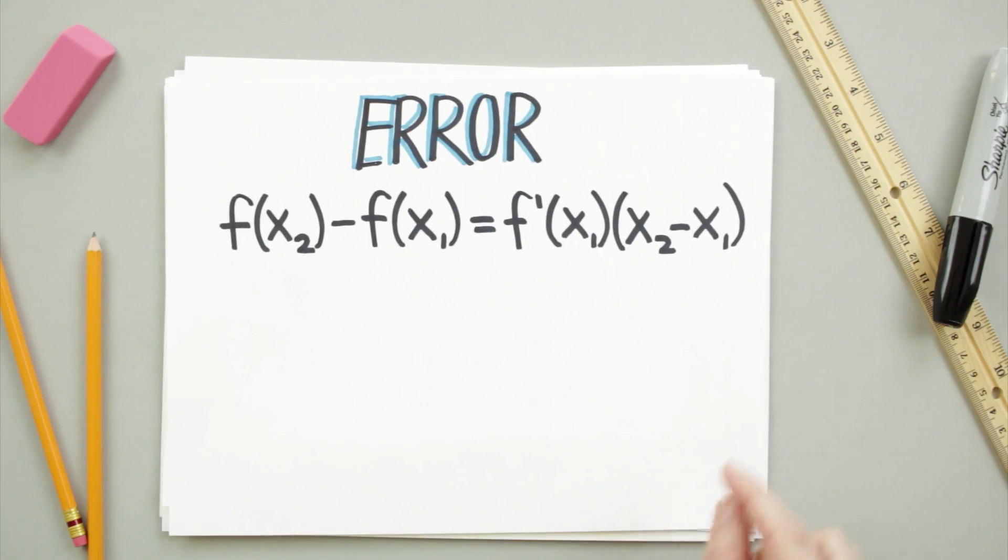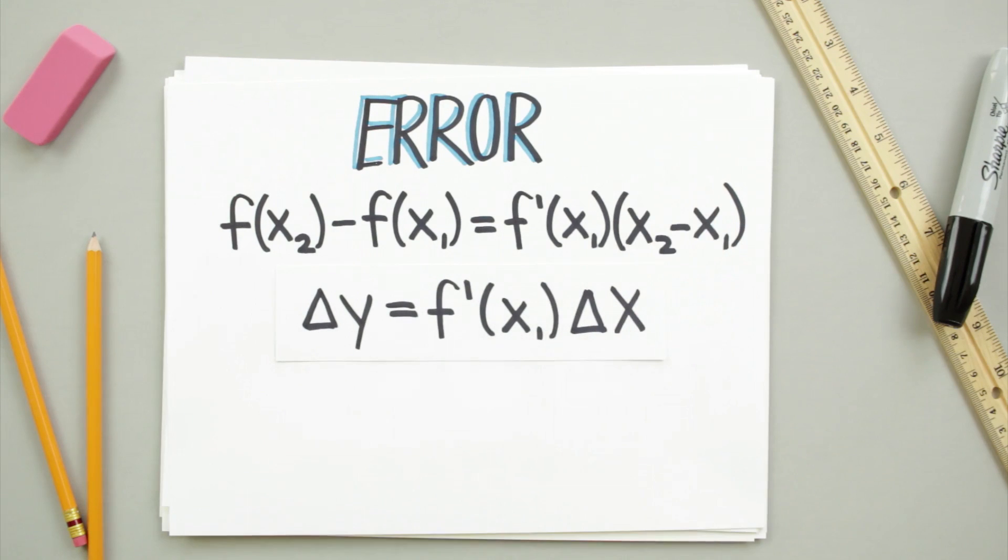So, if we subtract f from both sides, the left hand side will give us the difference in y, and this is the error in our estimation. So the error can just be calculated using everything that's left on the right hand side of the equation, meaning the product of the derivative and the difference in the x values.